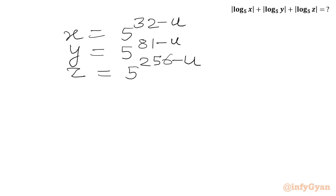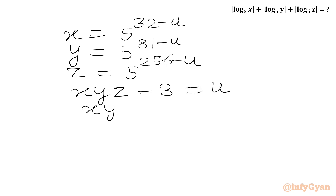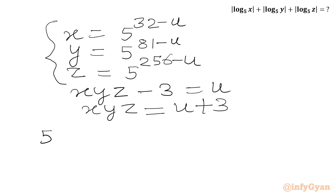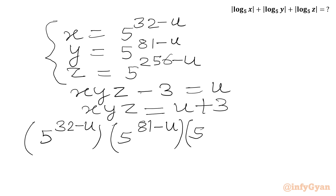Now we will use our substitution equation: xyz minus 3 equal to u, so xyz equals u plus 3. We have x equal to 5 raise to the power (32 minus u), y equal to 5 raise to the power (81 minus u), and z equal to 5 raise to the power (256 minus u). Plugging in these values: 5^(32−u) times 5^(81−u) times 5^(256−u) equals u plus 3.